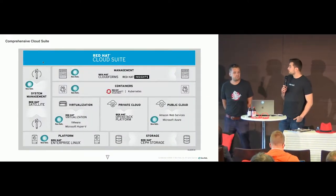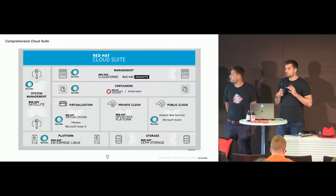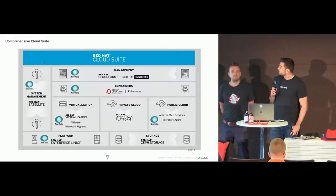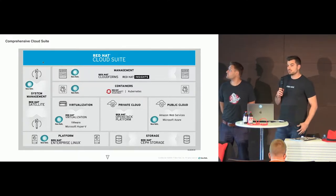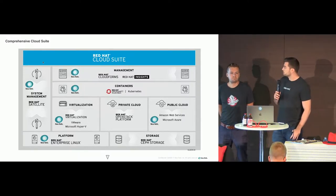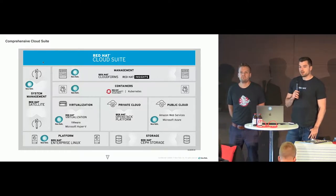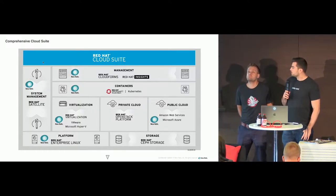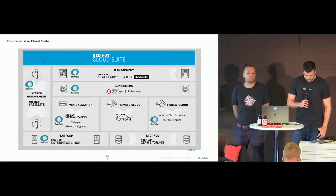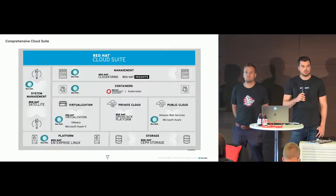I just want to start with a high-level view to show you where New Relic can help with your Red Hat stack. You can see visually on this slide which components we integrate with and where we can help you monitor those components. Typically you might start by installing our infrastructure agent on your Red Hat Enterprise Linux to monitor the performance of your servers — this also includes an integration for management tools such as Ansible.